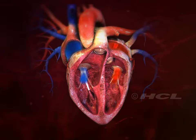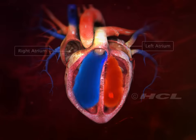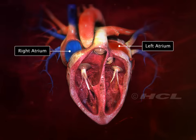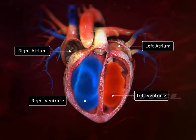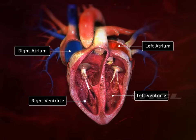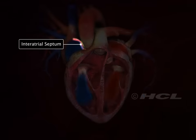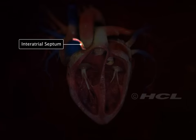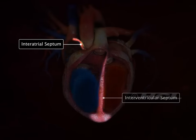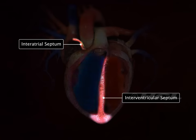The human heart has four chambers. The two upper chambers are the atria and the two lower chambers are the ventricles. The interatrial septum separates the two atria, and the interventricular septum is the partition between the two ventricles.